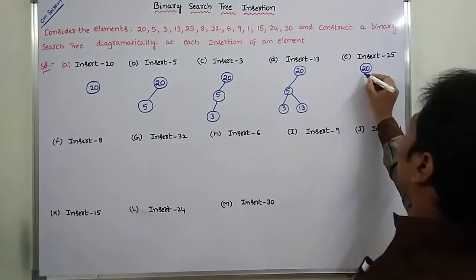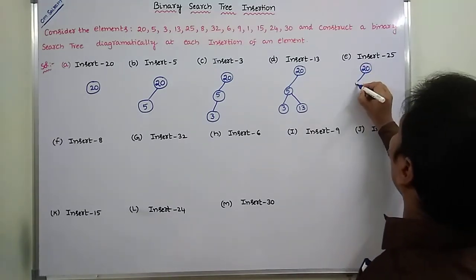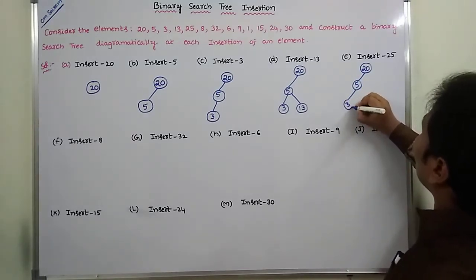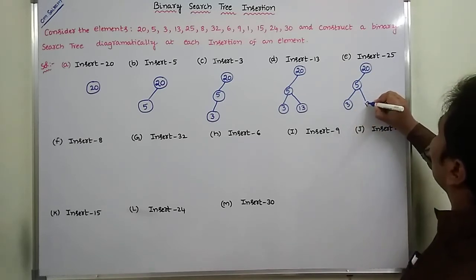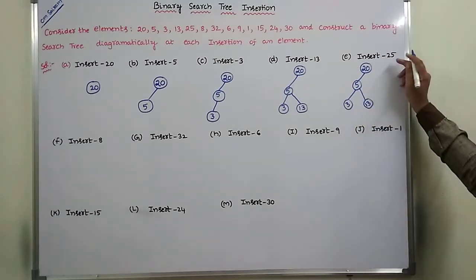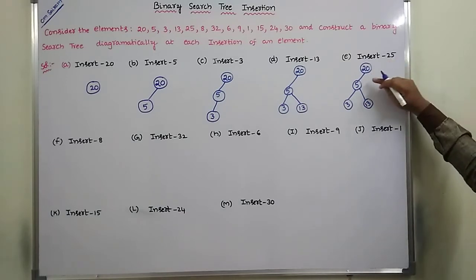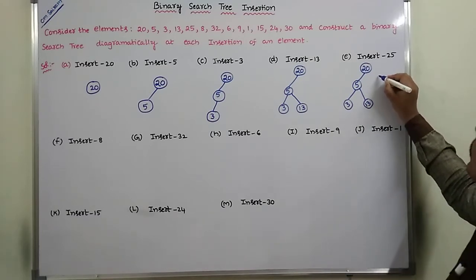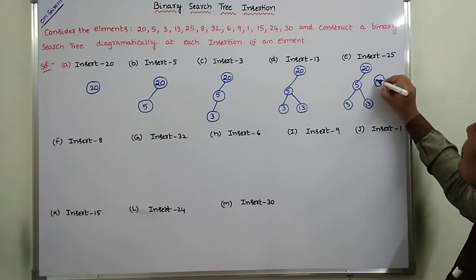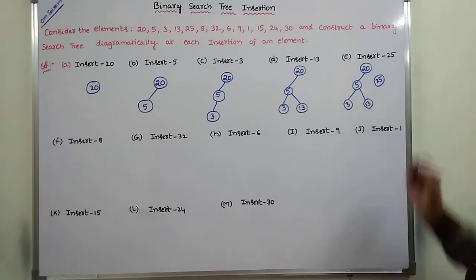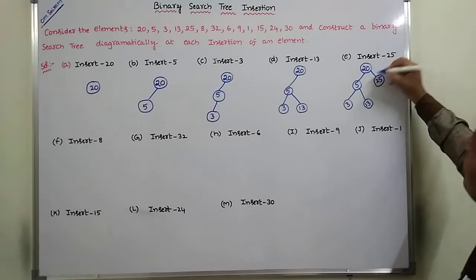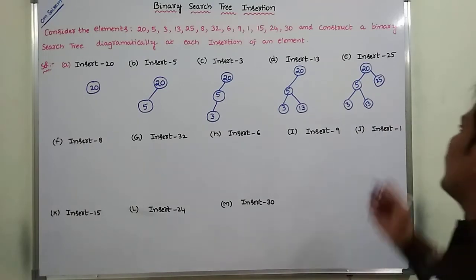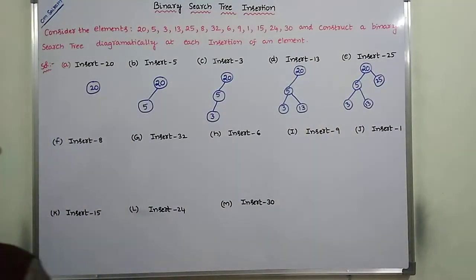Next, we are inserting element 25. Element 25 is compared with the root node 20 — 25 is greater than 20, so go to the right subtree. Here the right subtree is empty, so we create a new node and insert this value. Now 25 becomes the right child of root node 20. This is the binary search tree after inserting element 25.